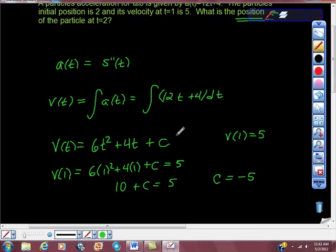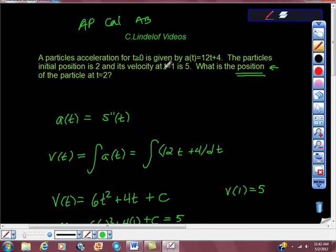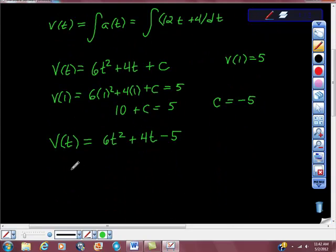So I'm just going to switch this out and say that velocity is equal to 6t squared plus 4t minus 5. So now I know I've used this piece of information that they gave us early on. And remember also that they gave us this initial position of 2 at that time of 0.